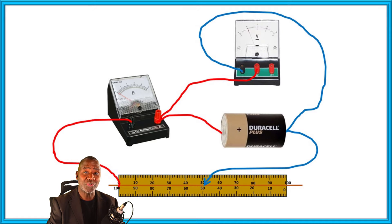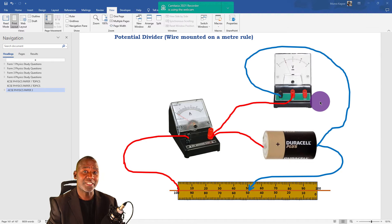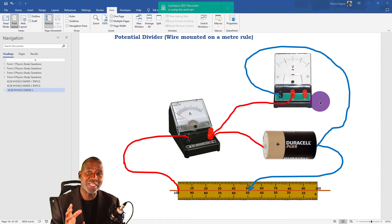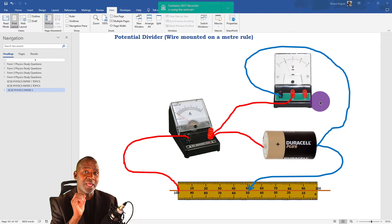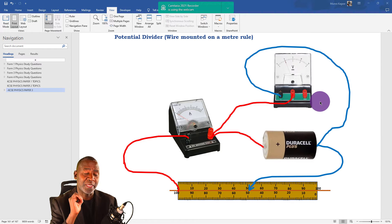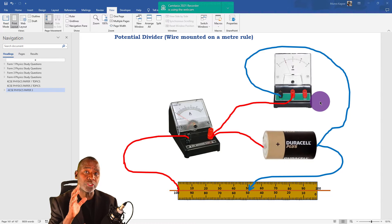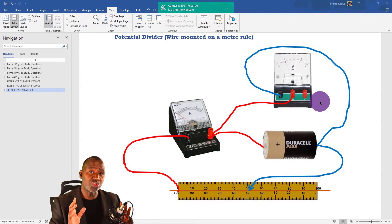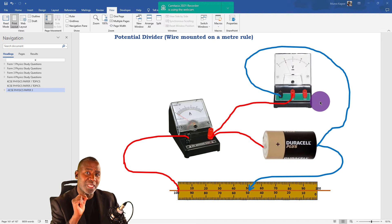Hello and welcome to part 3 of KCSE Physics Practical Paper. This is the third part of a series of videos I'm releasing on this particular paper. Paper 3 carries 40% of the total marks. In this practical paper, I'm looking at one section of the exam which usually gives students a lot of problems — the question that involves electricity, especially the connections.